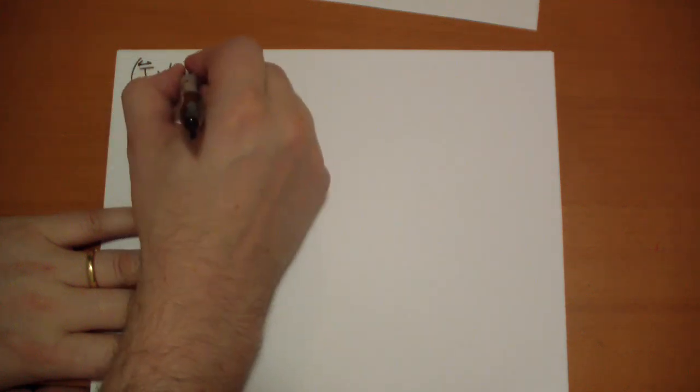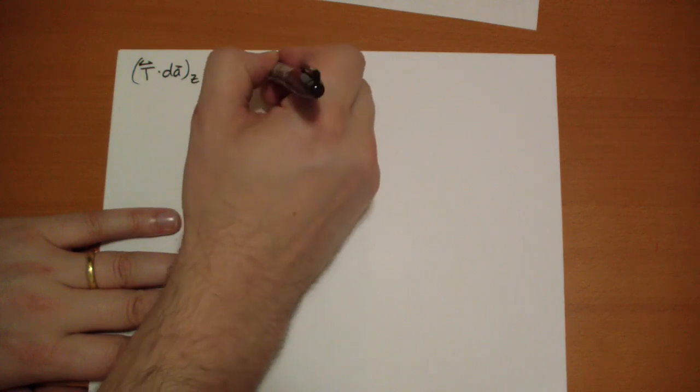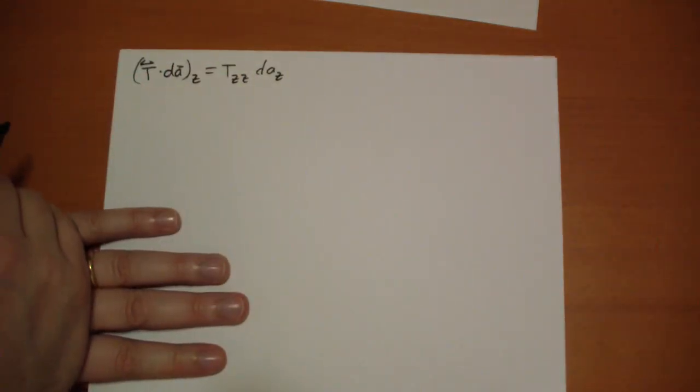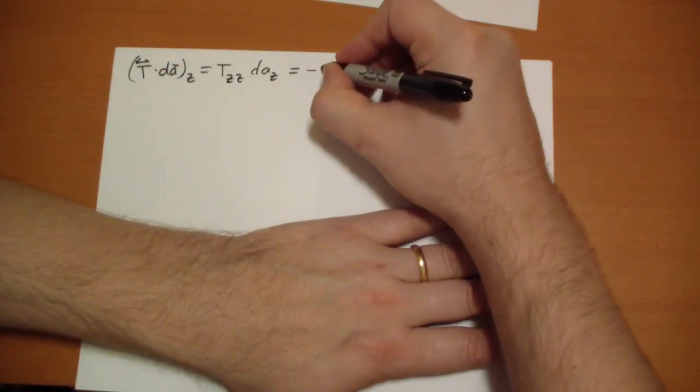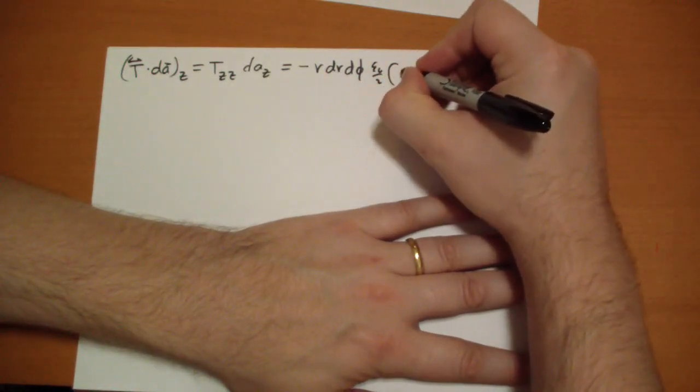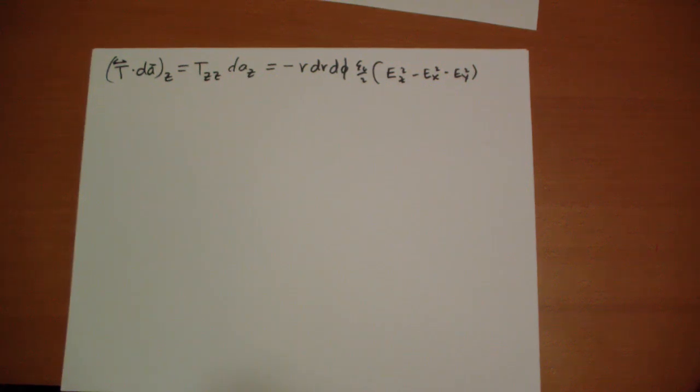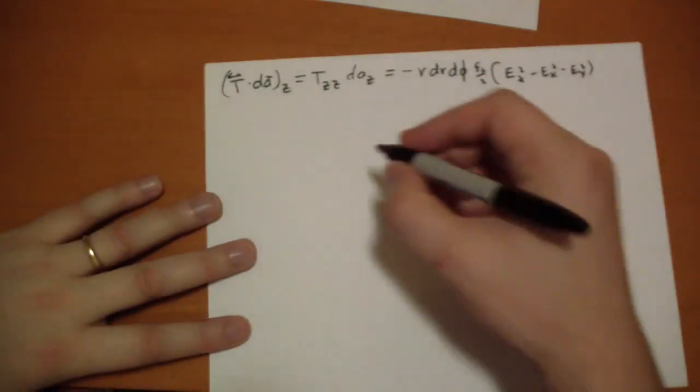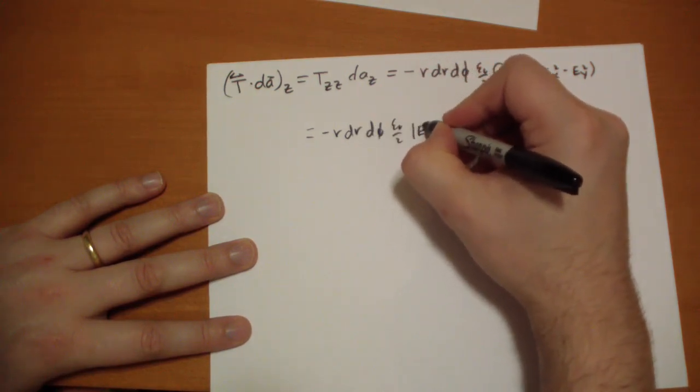So we can actually use this same stuff pretty much, except for our e is the e outside. So, t dot dA in the z direction is going to be tzz. Once again, the surface is pointing down, d a in the z direction. So we get minus r dr d phi. That's the z component. And then tzz is epsilon naught over 2, Ez squared minus e x squared minus e y squared. This is the electric field outside the sphere.